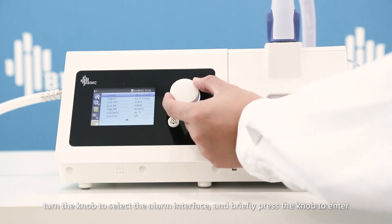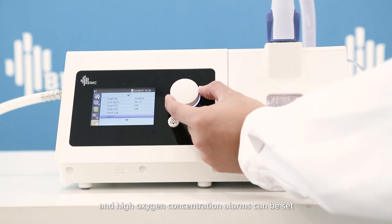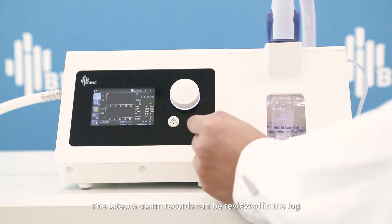Briefly press the knob to enter. Low oxygen saturation, low oxygen concentration, and high oxygen concentration alarms can be set. The latest six alarm records can be reviewed in the log.